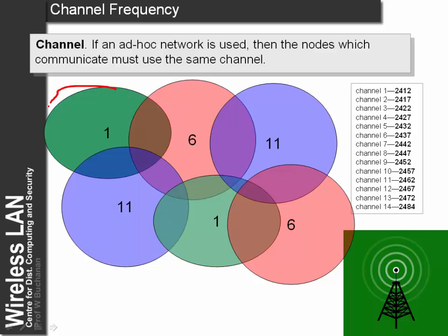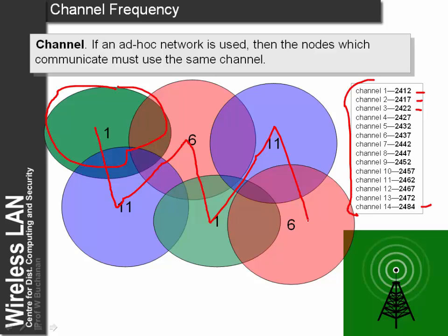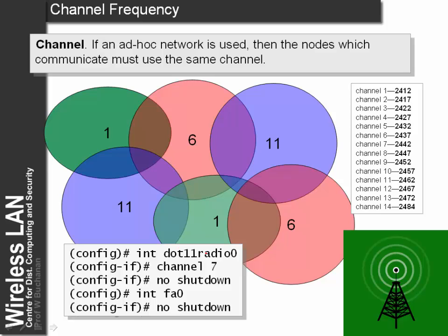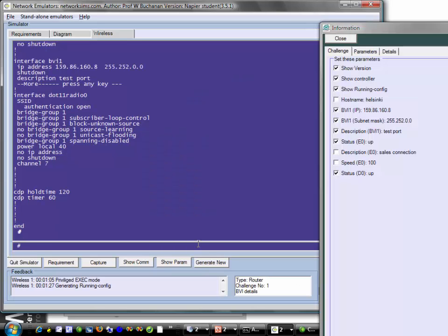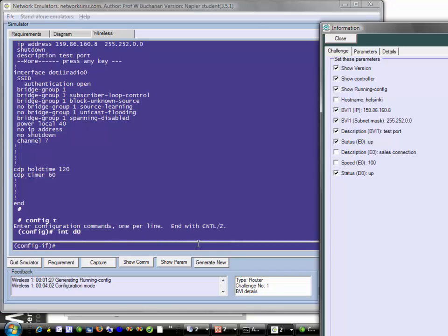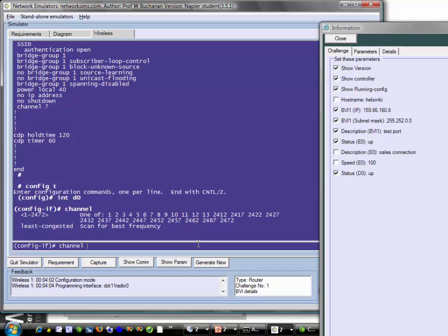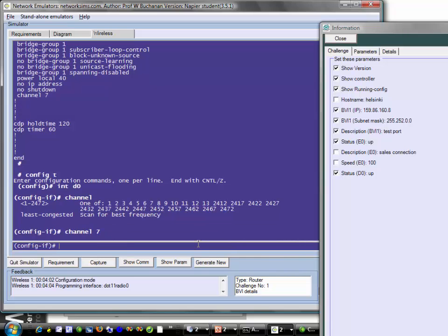We can have different channels for our access points, with different center frequencies. We can assign channels for users to use as they migrate through the network, ensuring no two channel numbers are the same so there is no interference. To configure this, we go into the radio interface — configure interface D0 — and define the channel number. We can use channels one through thirteen, and we can also provide the frequency for a specific channel.